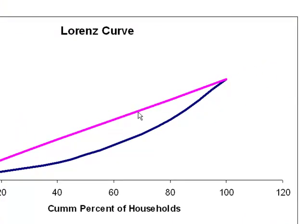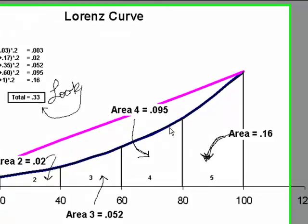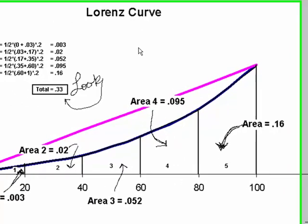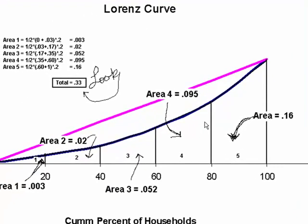The Lorenz curve shows, however, that the income distribution is not perfect. Now, let's find the area underneath the Lorenz curve so that we can begin to find the Gini coefficient. Using the properties of trapezoids, I have calculated each of the areas. The total of those areas adds up to 0.33.